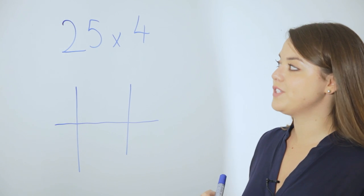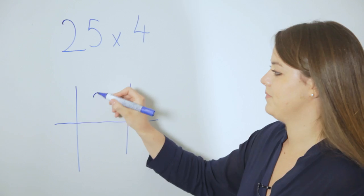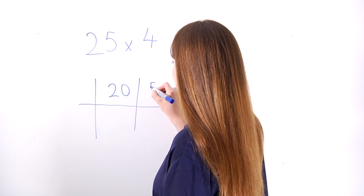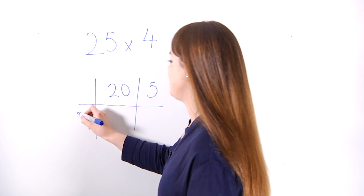Again, the first thing we're going to do is partition 25 into tens and units. We then take the number we're multiplying with and put it here.